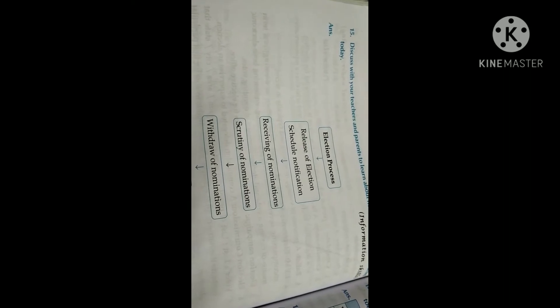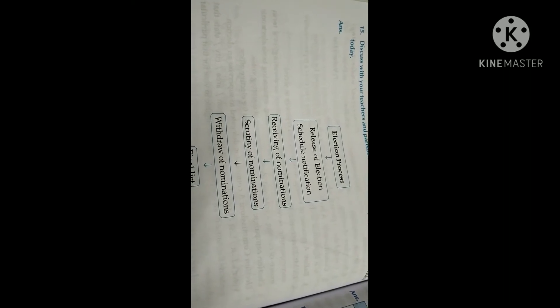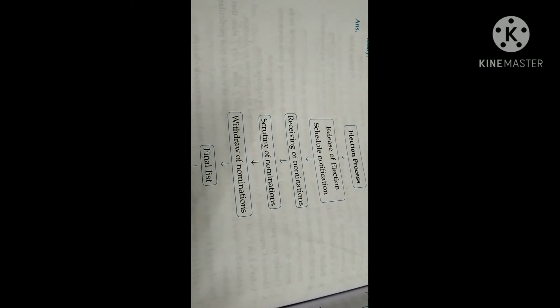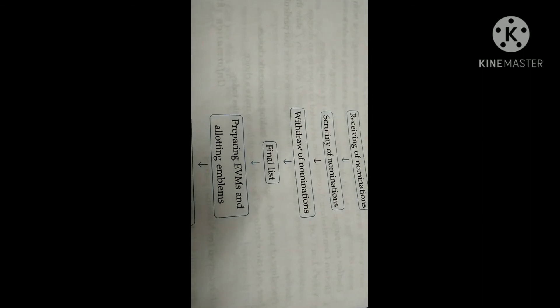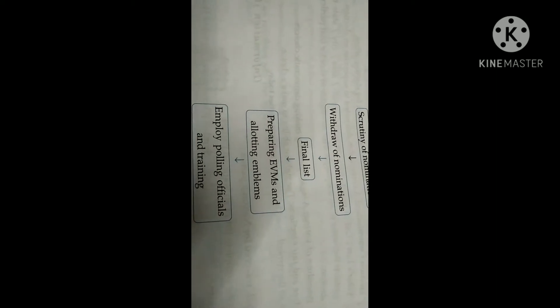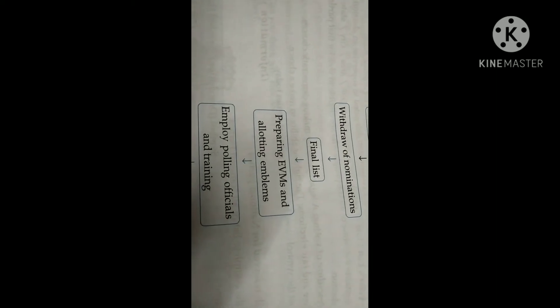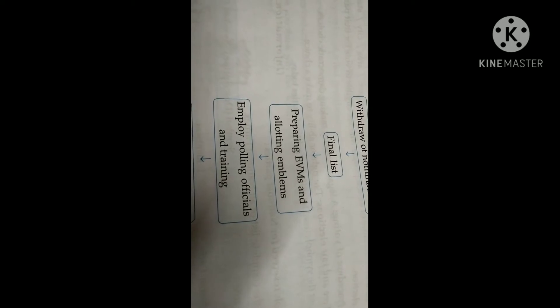This is the election process: release of election schedule notification, receiving of nominations, scrutiny of nominations, withdrawal of nominations, final list, preparing EVMs and allotting emblems, employing polling officials and training, conducting of polling, counting, result announcement, and formation of government.